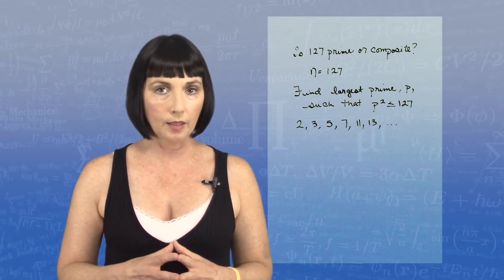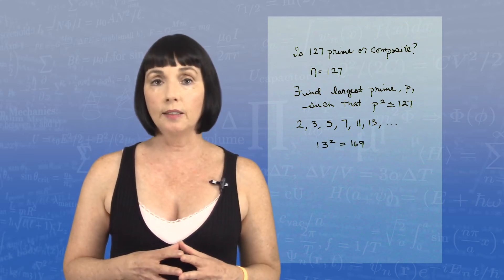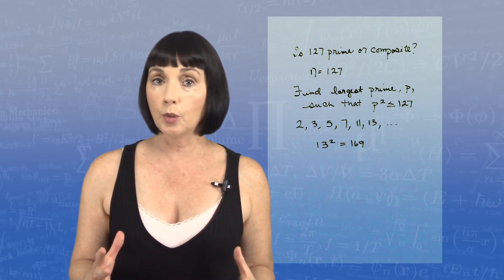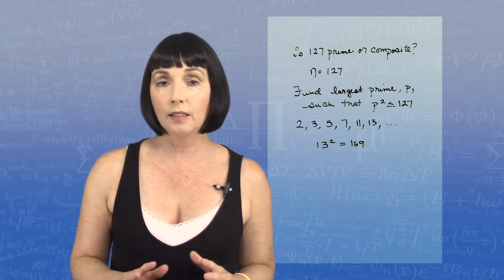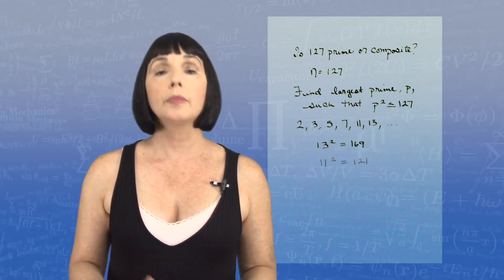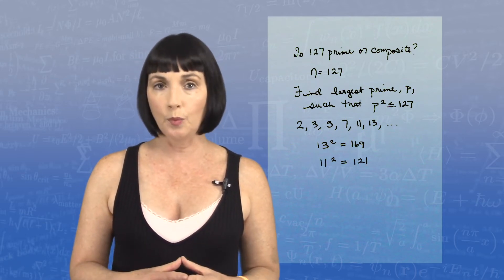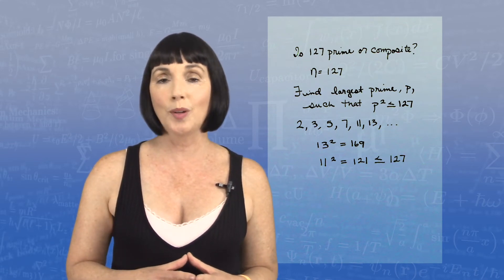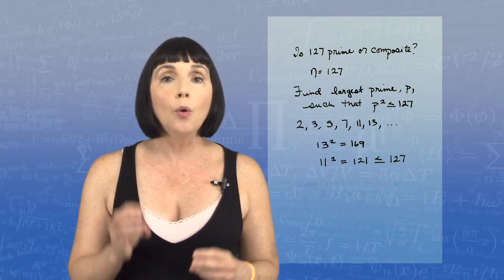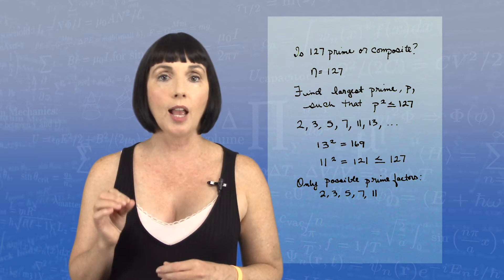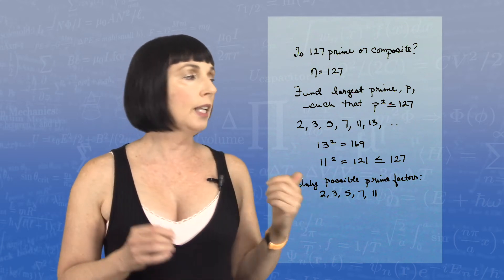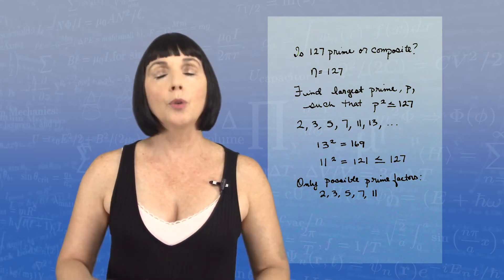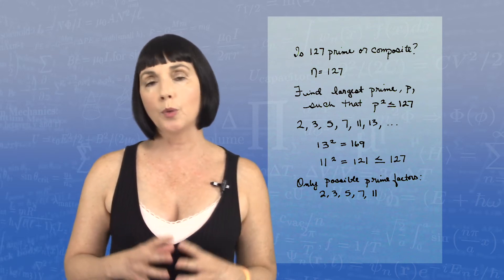Alright, so what's 13 squared? 13 squared is 169. Now that's greater than 127, so I don't have to go that high. What's 11 squared? 11 squared is 121. That's less than or equal to 127. So the only prime numbers I have to check are 2, 3, 5, 7, 11. Those are the only possible prime factors of 127.